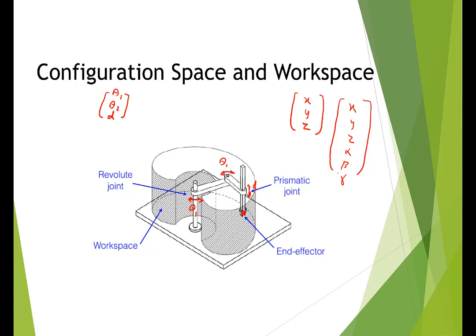From the previous session, you have an idea of what these angles mean. If we're using Euler angles, alpha, beta, gamma represent consecutive rotations about z, y, z axes. Configuration space holds the joint variables, and workspace shows the position or position and orientation of the robot end effector. The goal of robot modeling and forward kinematics is finding a function that gives us workspace as a function of joint variables, or configuration space.